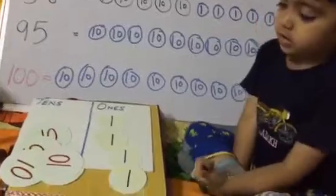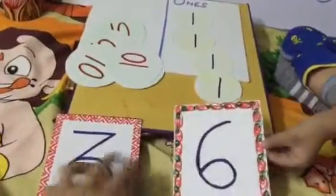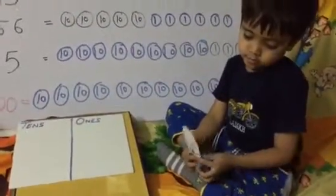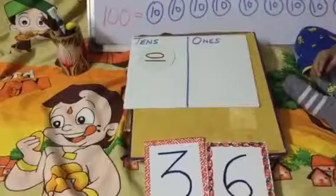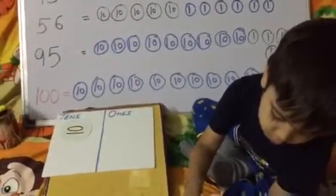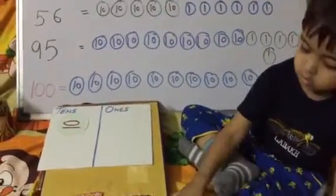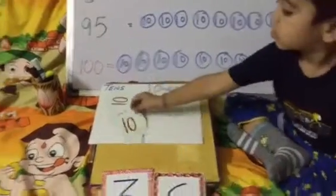Now, what will we do? Take this. What is this number? Thirty-six. Yes. Thirty-six. How many tens and how many ones are here? How many tens? How many ones? Ten only three. And one only six. Okay, put. Three tens. Very good.